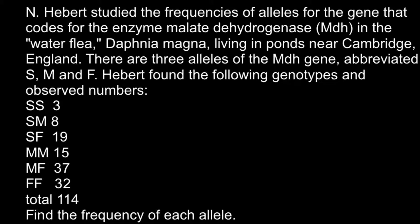In my previous videos I showed you how to find allelic frequency when we have only two alleles. For example, capital A as the dominant allele and small a. So these two alleles would make three genotypes: one homozygous dominant, one heterozygous, and one homozygous recessive. Today we have three alleles — S, M, and F — and these three alleles would make six different genotypes. So how are we going to find allelic frequency?